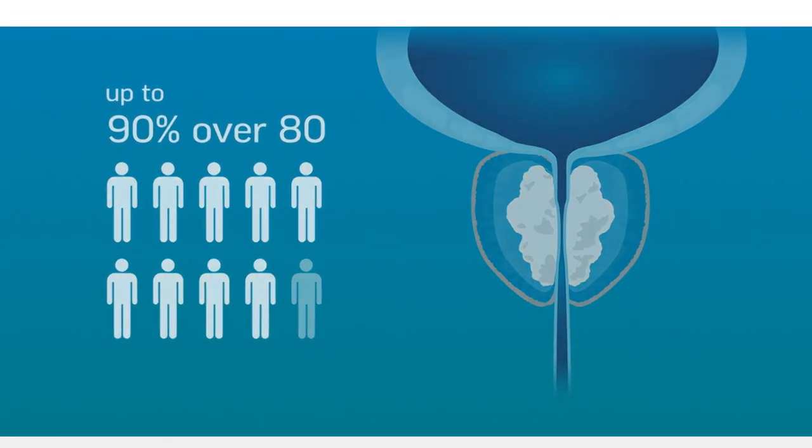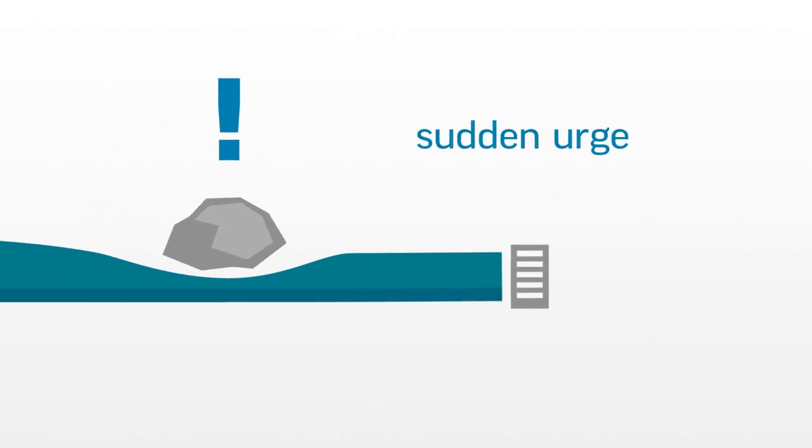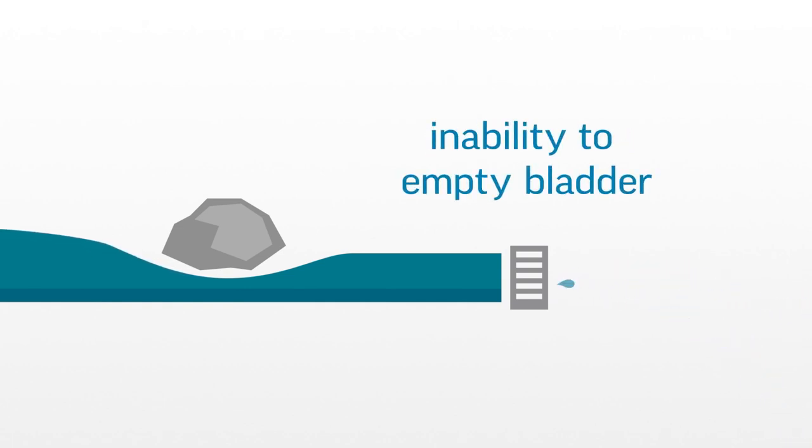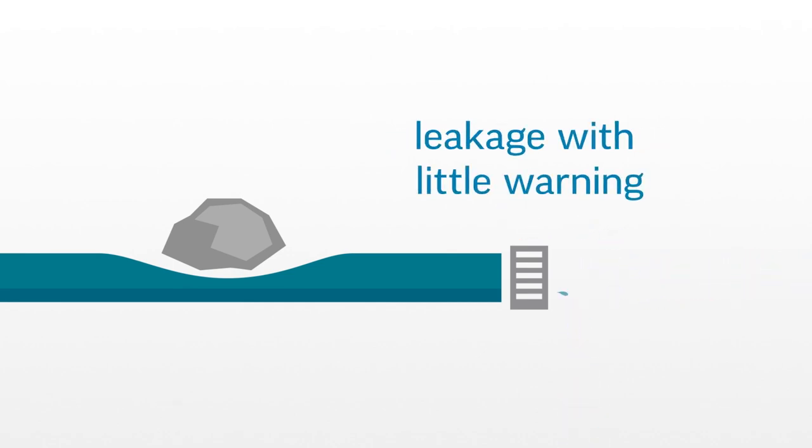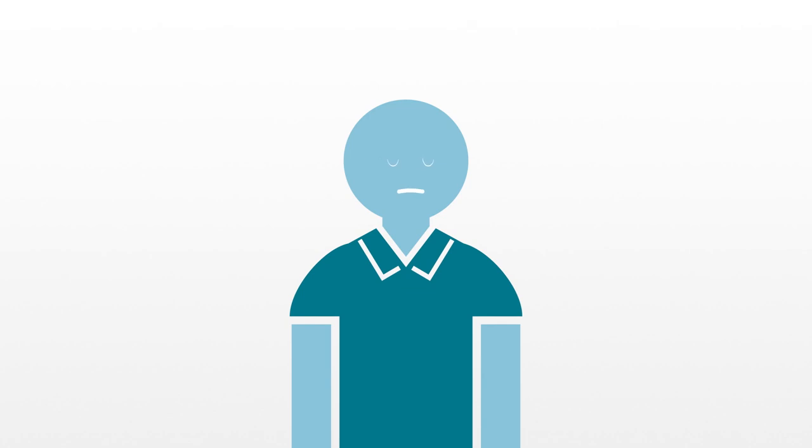An enlarged prostate can squeeze down on the urethra and cause symptoms such as a frequent need to urinate day or night, a sudden strong urge to urinate, intermittent urination, starting and stopping, poor stream during urination, inability to completely empty your bladder, painful urination, leakage with little or no warning. In short, BPH is no fun for anyone.